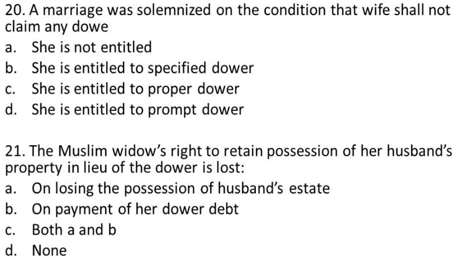Question 21: A Muslim widow's right to retain possession of her husband's property in lieu of dower is lost on — (A) losing possession of husband's estate, (B) payment of her dower debt, (C) both A and B, (D) none of the above. The answer is B: on payment of her dower debt.